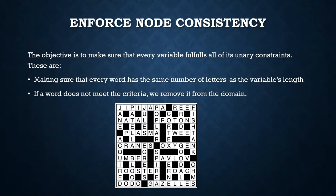Starting with enforced node consistency, we want to make sure that every variable fulfills the unary constraints, and it's a pretty simple function. We only make sure that the word has the same number of letters as the variable's length, otherwise we remove it from the domain.